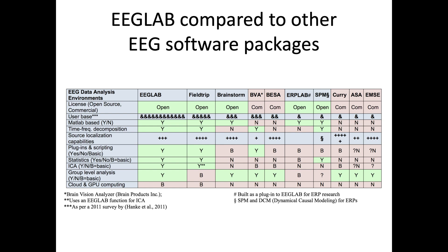This is a comparison of EEGLAB with other software packages, both commercial and FieldTrip. Of course, this is probably biased, but it lists the different types of licenses — either open source or commercial — user base, and different capabilities of the software. EEGLAB has the most greens compared to the other ones. This might not be totally up to date with respect to each software, but it gives you a rough idea of the field.